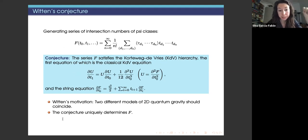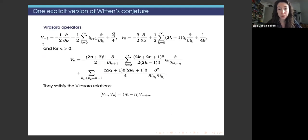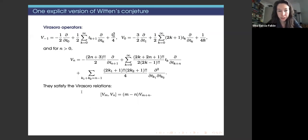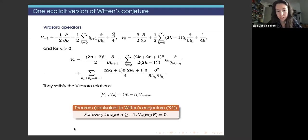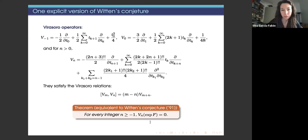Another important thing about Witten's conjecture is that it uniquely determines F, allowing us to compute all Witten-Kontsevich intersection numbers that were previously difficult to compute with algebraic geometry alone. The explicit version uses Virasoro constraints: we have Virasoro operators indexed by integers starting from minus one, satisfying Virasoro relations. Witten's conjecture states that for every integer bigger or equal to minus one, the Virasoro constraints annihilate the partition function.